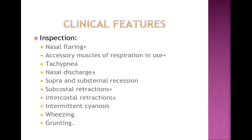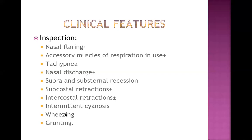Also on inspection: supra- and substernal recession, subcostal retraction, and intercostal recession — all features of respiratory distress — intermittent cyanosis in severe conditions, wheezing (sometimes audible on entering the room without a stethoscope), and grunting in severely affected babies. Grunting means the baby is struggling to breathe, maintaining pressure to keep the alveoli open.